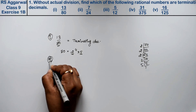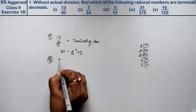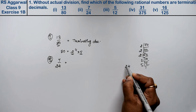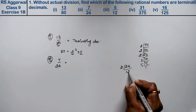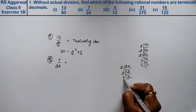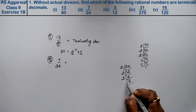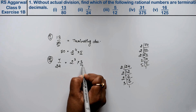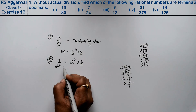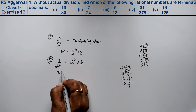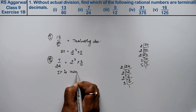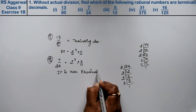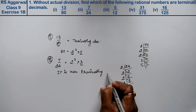Let's do the second part. The second part is 7 upon 24. If I take the prime factorization of 24: 2 × 2 × 2 × 3, which gives 2 to the power 3 into 3. So 24 = 2³ × 3. Since 3 is present, that means it is a non-terminating decimal.